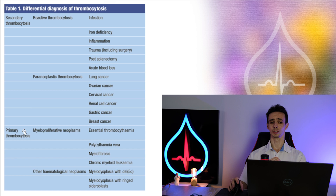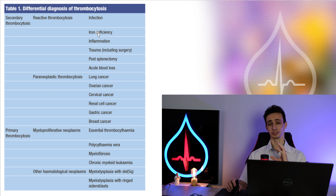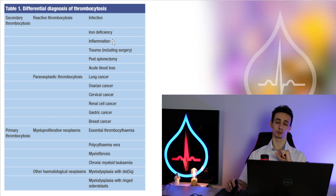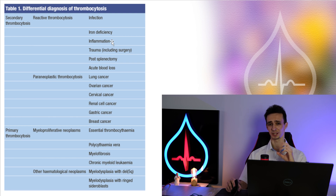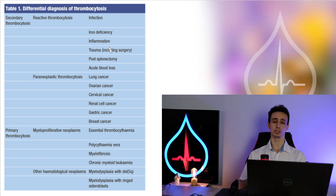All other causes are more common, and these are reactive thrombocytosis, meaning there is some kind of infection, inflammation, or trauma that can cause an increase in thrombocytes. Usually it is temporary and will go away. That's why if we suspect this, we can just repeat the blood test to see if thrombocytes have normalized — usually we do it in six weeks.